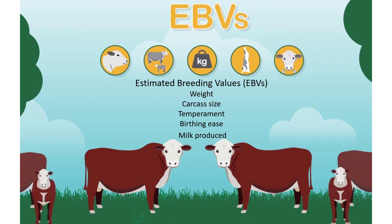EBV indirectly looks at genetically caused characteristics. Things they usually look at are weight, carcass size, temperament, birthing ease, and milk produced. These are things farmers are very concerned with, specifically with cattle — because the more something weighs, the more meat it has, the more the animal will fetch at the slaughterhouse, or a bull that is very big will fetch more money. Temperament is very important if a farmer wants to be able to handle the animal. Birthing ease is important because if the female cannot give birth easily, she or the calf could die. And milk produced is important because you want enough milk so the calf can survive until weaning.